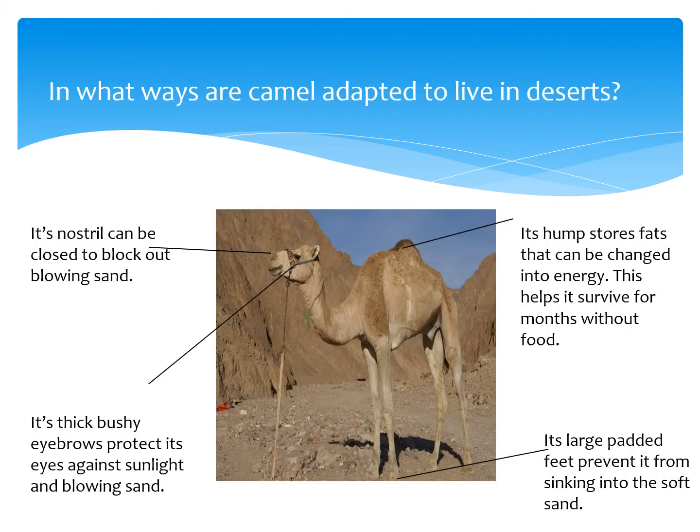Animals are adapted to the environment of their habitat. The characteristics that help an animal to survive in its habitat are called adaptations. On this slide, the best example given is: in what ways is a camel adapted to live in the desert? Camels live in hot and sandy deserts.